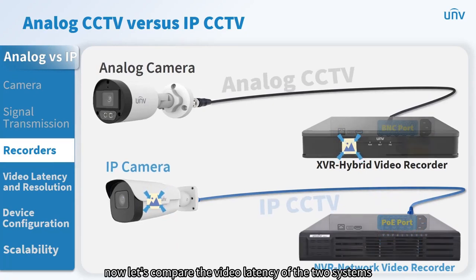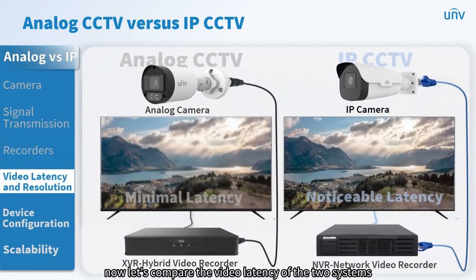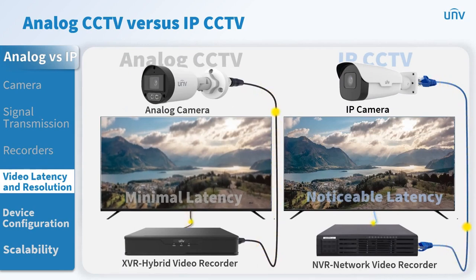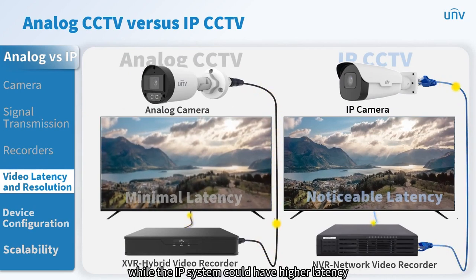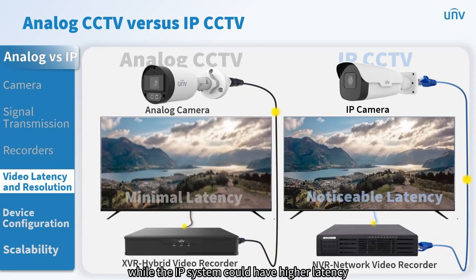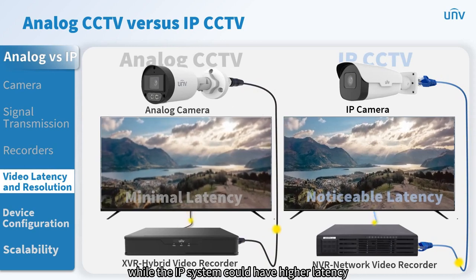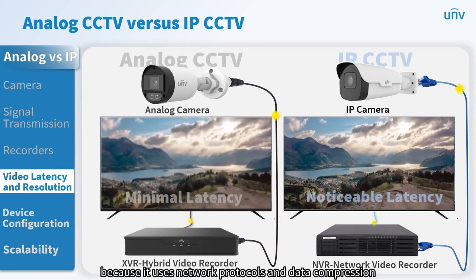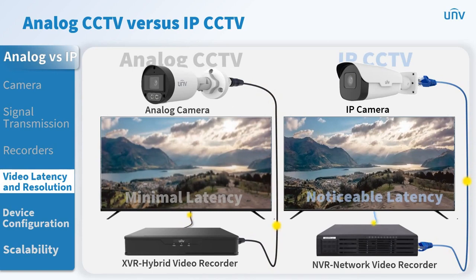Now let's compare the video latency of the two systems. Analog CCTV has very low latency, almost instantaneous. The IP system could have higher latency because it uses network protocols and data compression.